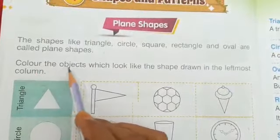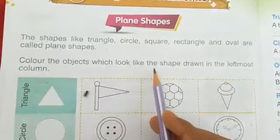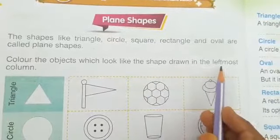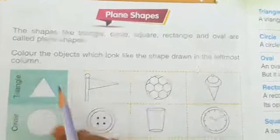Color the objects which look like the shape drawn in the leftmost column. This side shows the shapes.